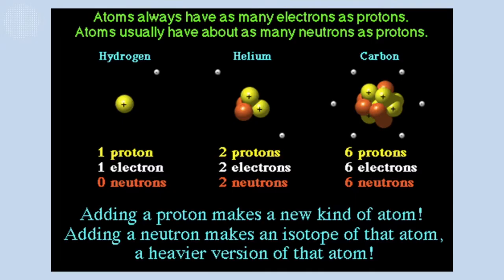Atoms always have as many electrons as protons. Atoms usually have about as many neutrons as protons, but sometimes that number changes — and that will be the tricky one. So if you look at hydrogen, it has one proton and one electron with no neutrons. Helium has two protons, two electrons, and two neutrons. And then carbon, which we saw before, has six protons, six electrons, and six neutrons. Adding a single proton makes a new kind of atom — that's pretty cool.